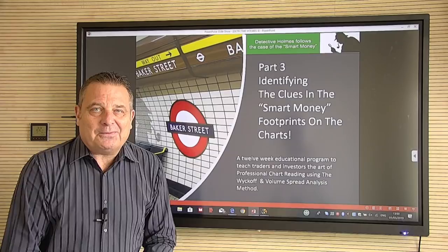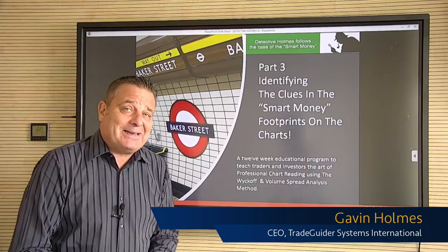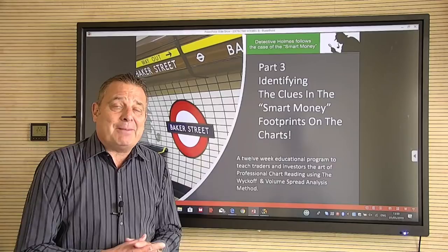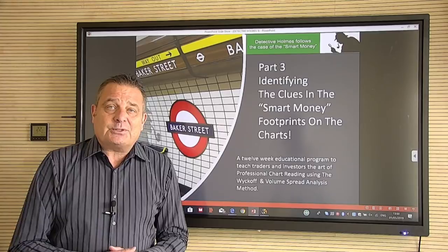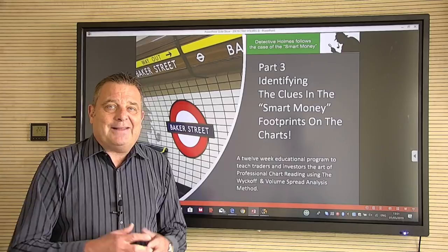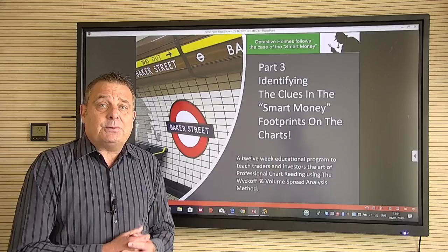Welcome to Part 3 of the 12-part series 'Detective Homes Follows the Case of the Smart Money.' Today we're going to talk about the clues — the smart money footprints — that come in on the charts. I've got a live trade running right now on our Markets.com MT5 platform from an alert that came in this morning as I was traveling up to London, where we're filming here in Liverpool Street.